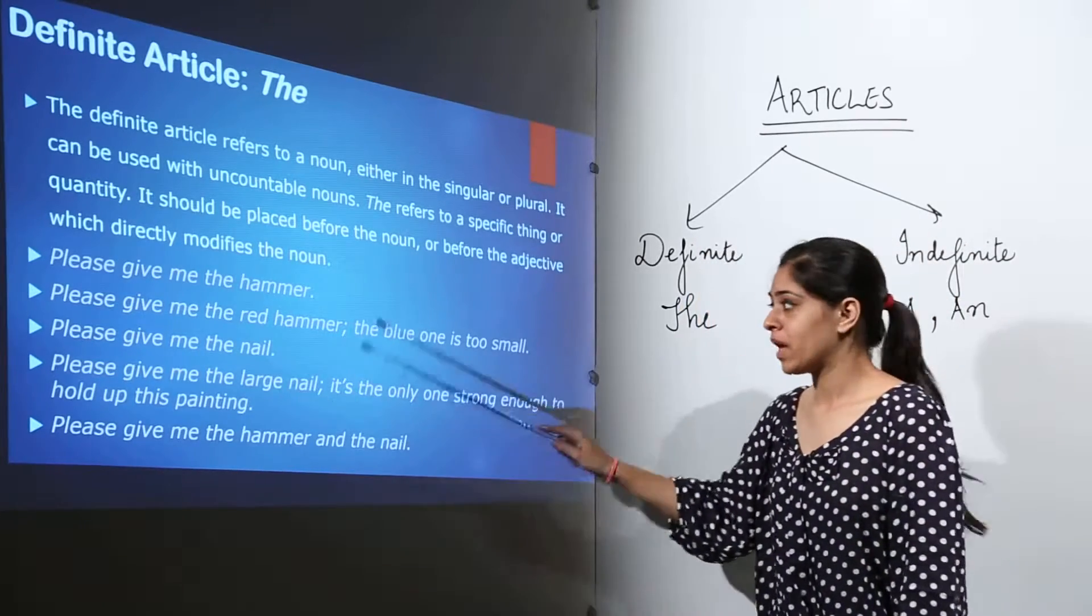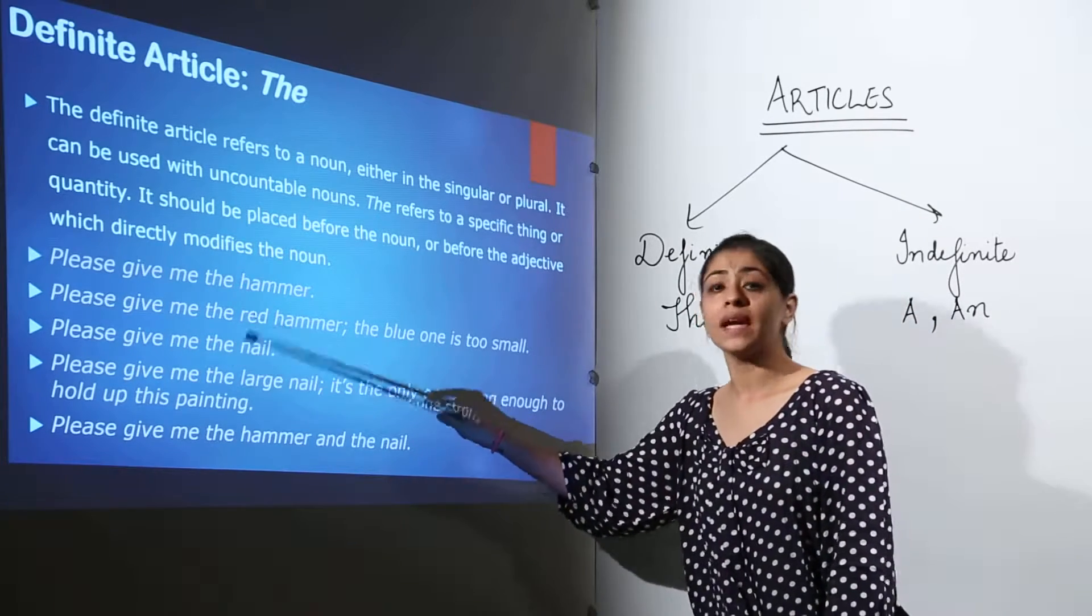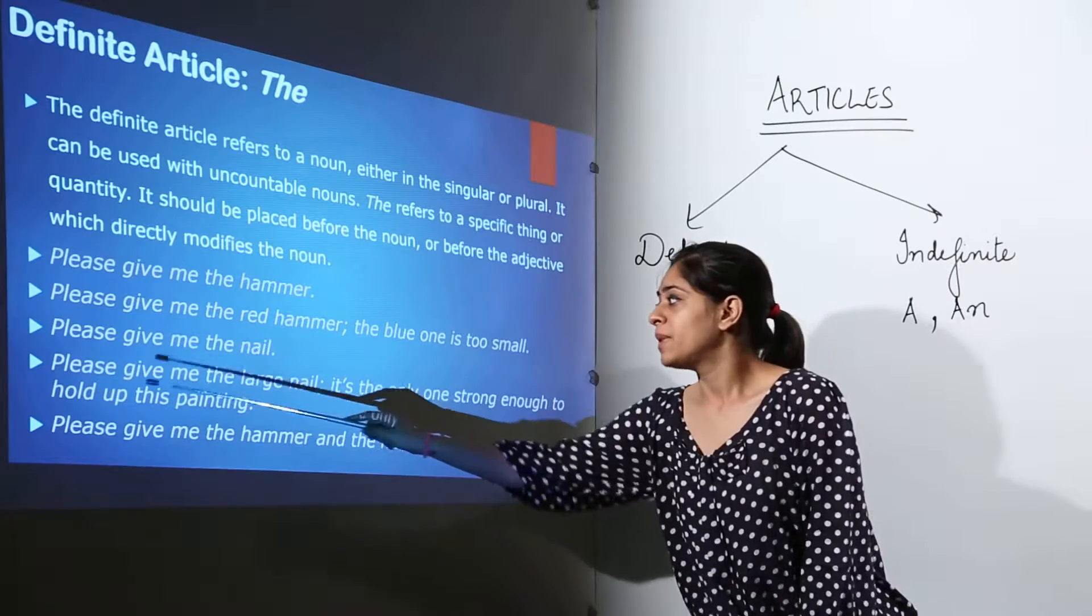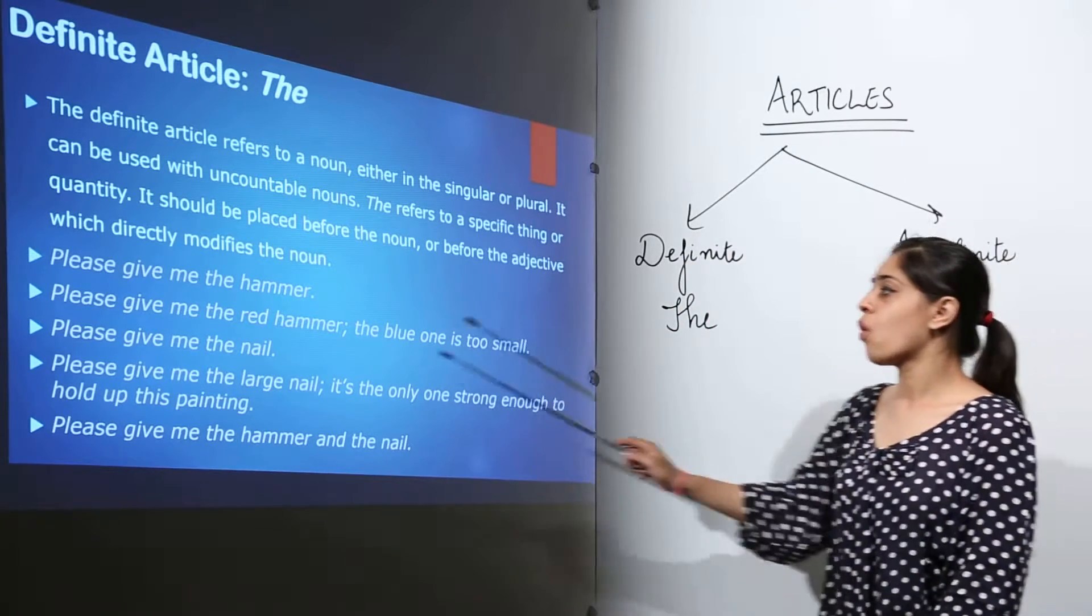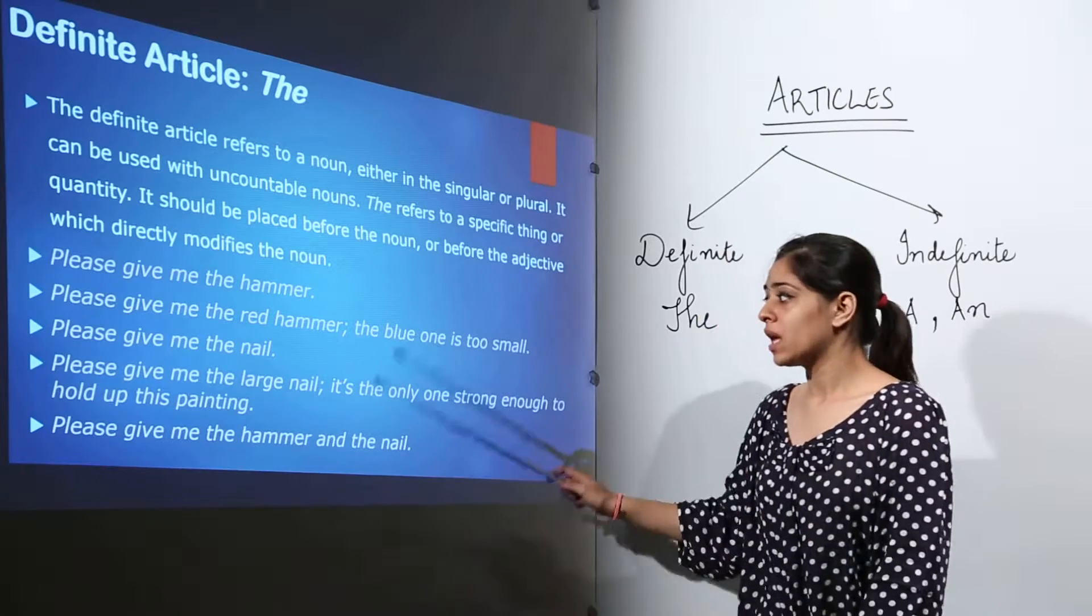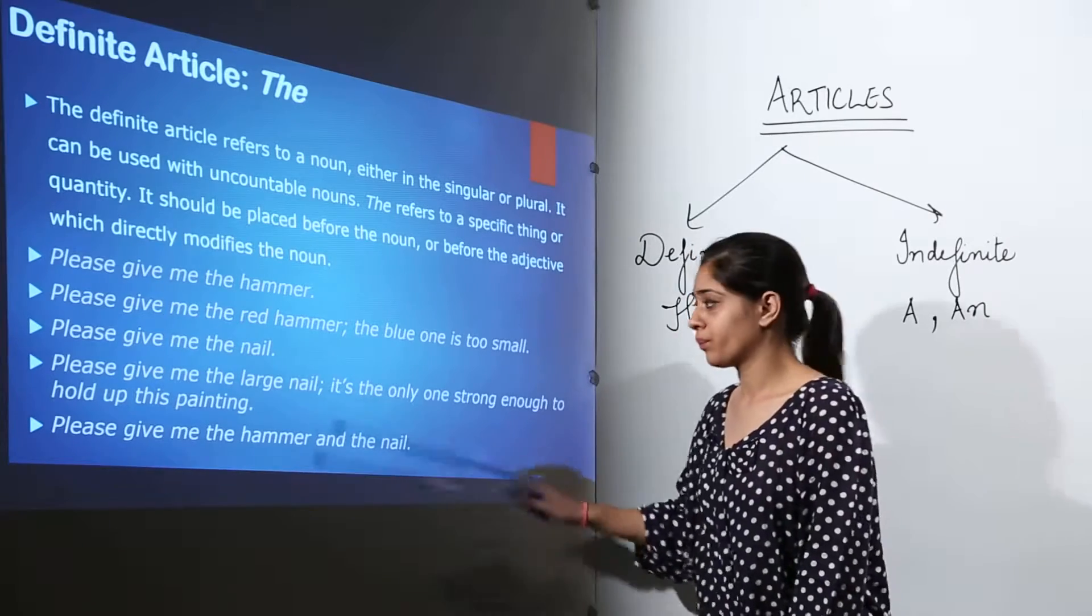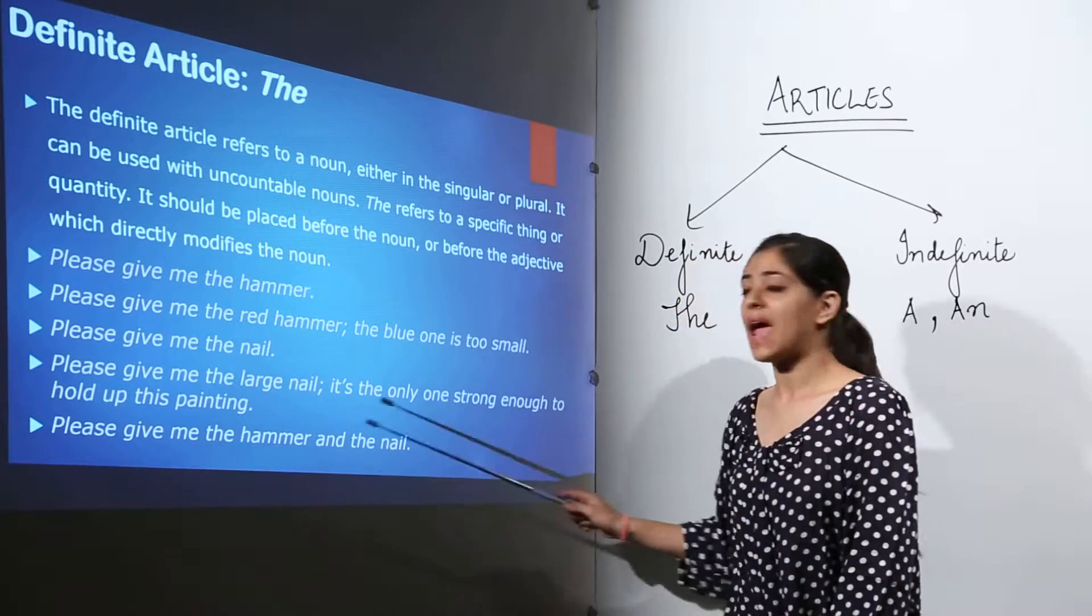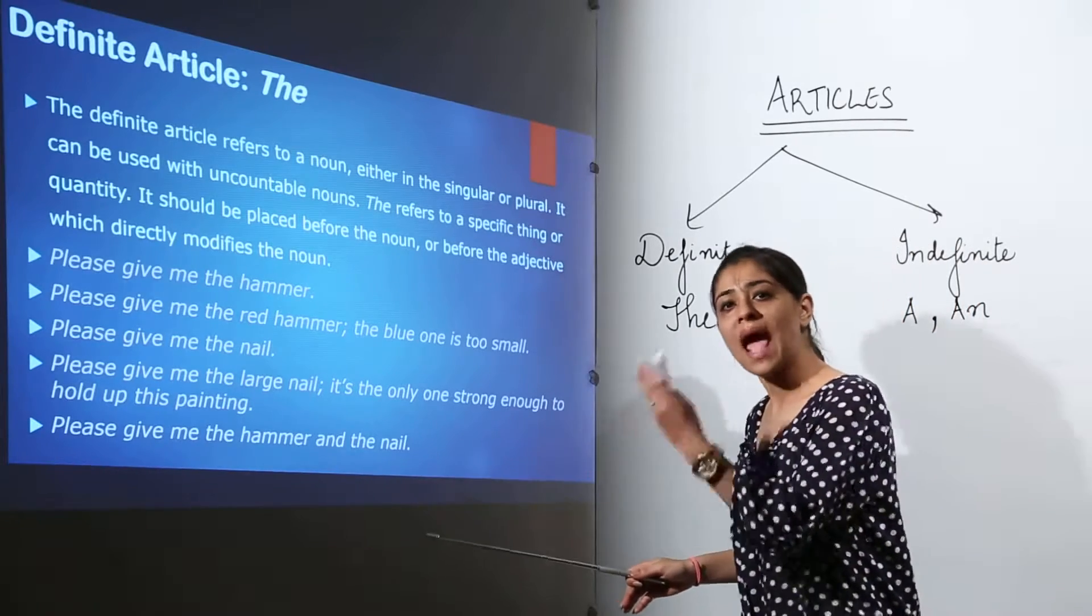Please give me the nail. Here again, the noun is being predefined with an article. Please give me the large nail. It is the only one strong enough to hold up this painting. Here we are using the before an adjective followed by a noun. Please give me the hammer and the nail. Here we are specifically talking about a hammer and a nail.